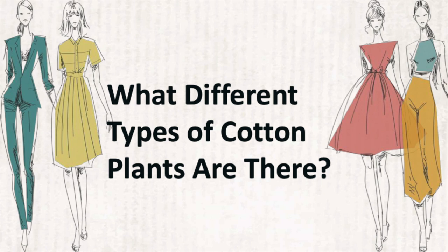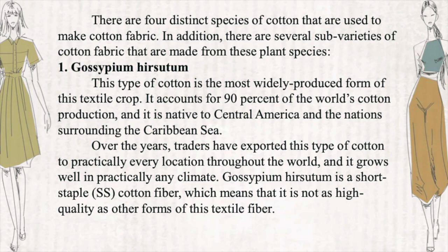There are four distinct species of cotton that are used to make cotton fabric, in addition to several sub-varieties. Gossypium hirsutum is the most widely produced form of this textile crop, accounting for 90% of the world's cotton production. It is native to Central America and the nations surrounding the Caribbean Sea. Over the years, traders have exported this type of cotton to practically every location throughout the world and it grows well in practically any climate. Gossypium hirsutum is a short staple (SS) cotton fiber, which means it is not as high quality as other forms of this textile fiber.